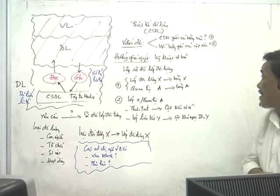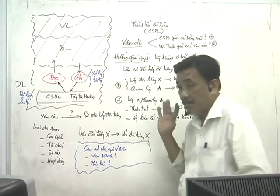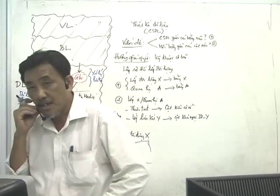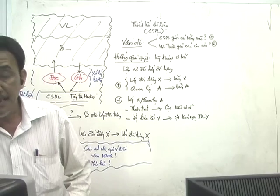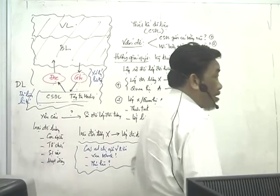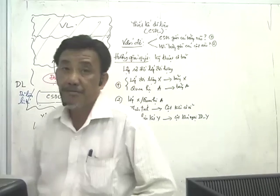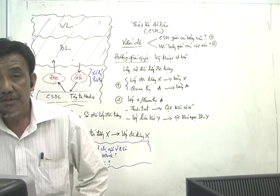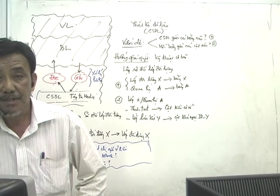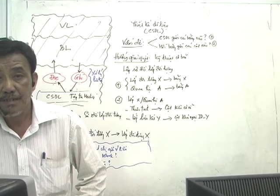Vấn đề này đã được đặt ra trong môn nhập môn công nghệ phần mềm: cho một ứng dụng quản lý mặt hàng, ứng dụng bán vé xem phim, ứng dụng làm thuê phòng khách sạn, ứng dụng quản lý nhân viên - câu hỏi muôn thuở là cơ sở dữ liệu này gồm có những bản nào, và mỗi bản có những cột nào. Đó là bài toán thiết kế cơ sở dữ liệu. Có rất nhiều hướng giải quyết khác nhau, và kỹ thuật tôi hướng dẫn là kỹ thuật dựa trên tiếp cận hướng đối tượng - đó là sợi chỉ đỏ xuyên suốt trong môn học này.